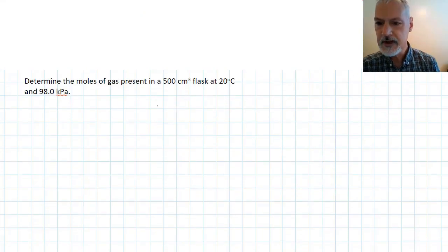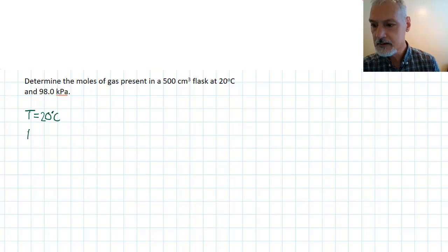Let's determine the moles of gas present in a 500 cubic centimetre flask at 20 degrees Celsius. So, let's see what information I've got. Temperature, 20 degrees Celsius. Pressure, 98 kilopascals. And I've got a volume, 500 cubic centimetres. And I want to figure out the number of moles.